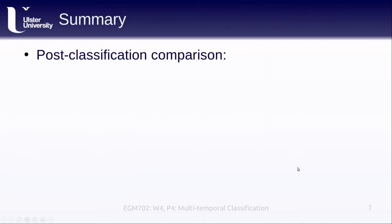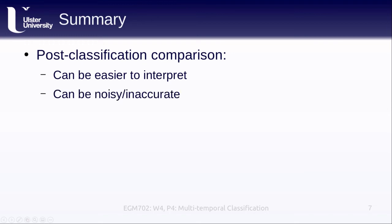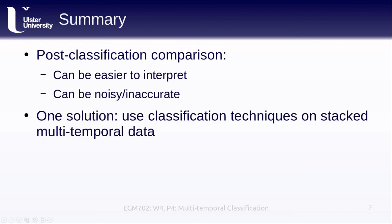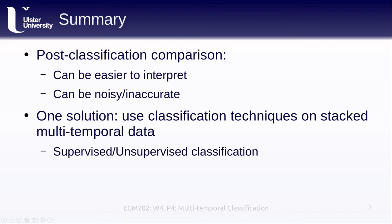To sum up: post-classification comparison can be much easier to interpret than some other change detection techniques, but it can also be very noisy or inaccurate. One solution is to use classification techniques on the stacked multi-temporal data, which gives information about pixels that have stayed the same between time 1 and time 2, as well as pixels that have changed classes. We'll need to do additional work to identify what those changes represent. This can be done with supervised or unsupervised classification, and also with principal component analysis.